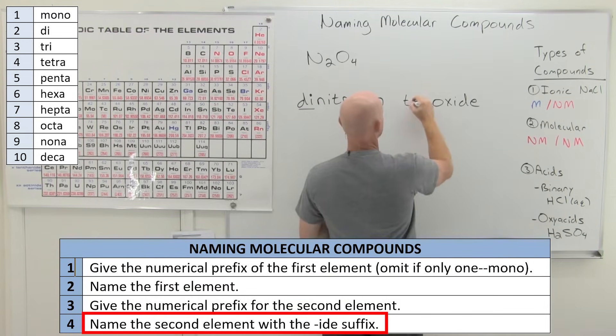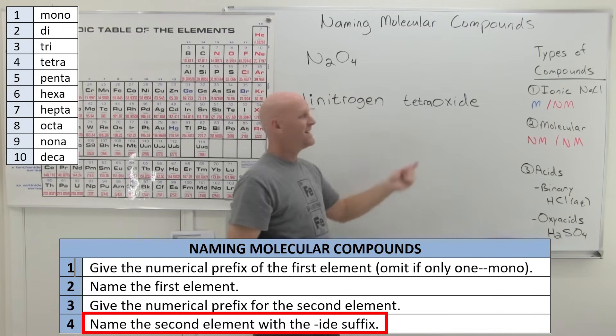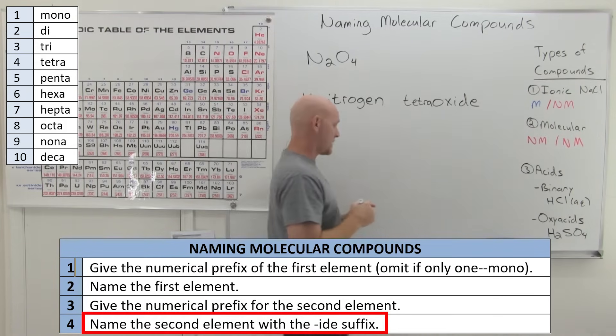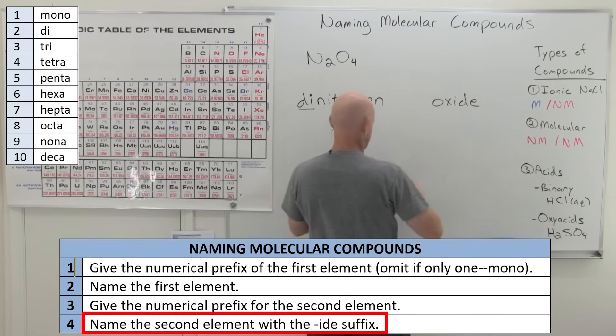And instead of saying just plain old oxide, we're going to put tetra at the front. But what we're going to find is that it would sound weird if we said tetraoxide. And they often avoid these vowel-vowel sounds. Not every time, but almost every time. And we're going to do that here. And so instead of saying tetraoxide, we're just going to say tetroxide.